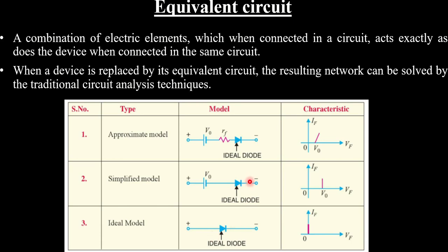If the diode is not ideal, the applied voltage has two additional dropping effects: one to overcome the knee voltage V0, and the other a drop across the forward resistance. Whenever a diode is in a circuit, it is better to replace it by its equivalent circuit. Generally we use the approximate model unless specified as ideal — in that case, zero resistance when forward biased and infinite resistance when reverse biased.